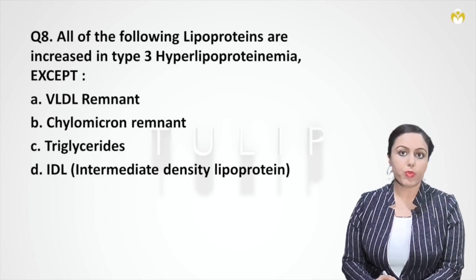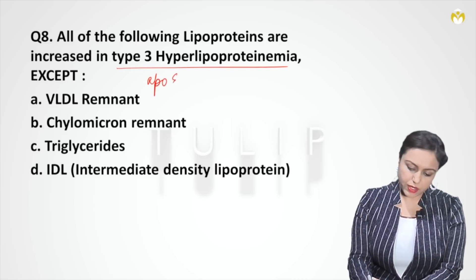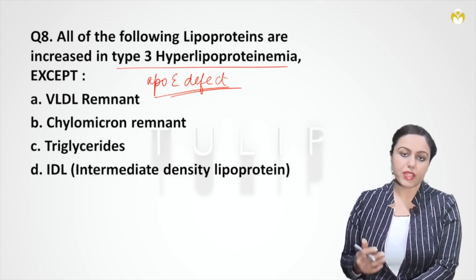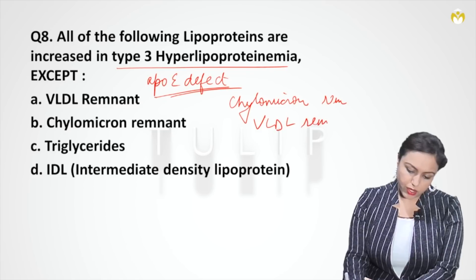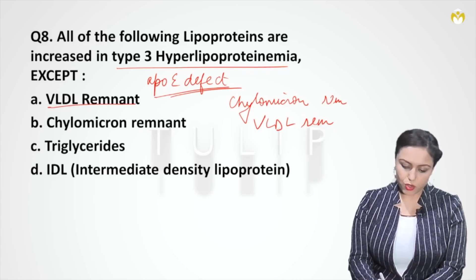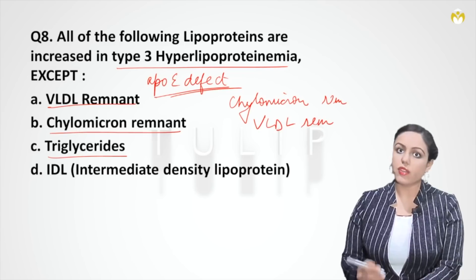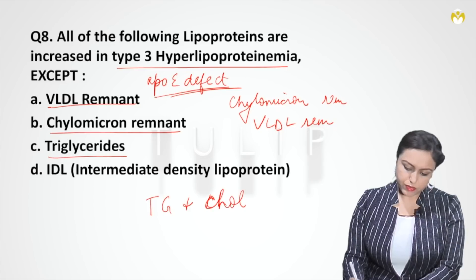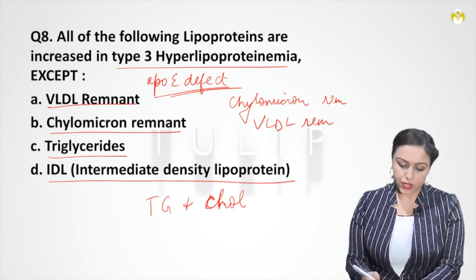Question eight: all of the following lipoproteins are increased in type 3 hyperlipoproteinemia except — ? In type 3, the defect is in apoE lipoprotein. ApoE is the ligand for chylomicron remnant and VLDL remnant, so these remnants are not taken up by the liver and increase in blood. Option A: VLDL remnant is increased. Option B: chylomicron remnant is increased. Option C: triglycerides are also increased — chylomicron remnant and VLDL remnant contain both triglycerides and cholesterol. VLDL remnant is also known as IDL (intermediate density lipoprotein), so options A and D refer to the same thing.